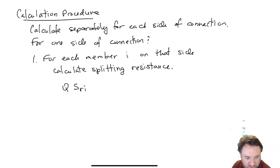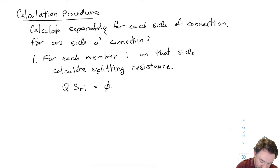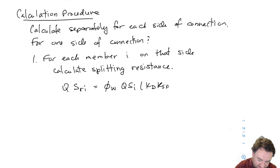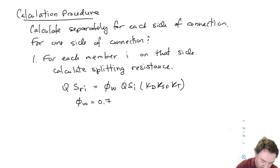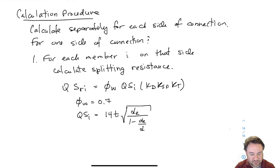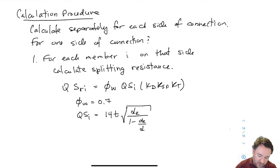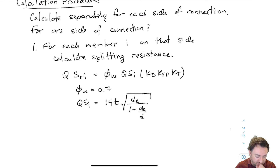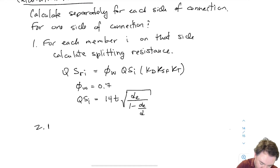I calculate the splitting resistance with this equation: QSRi = phi_W × QSi × KD × KSF × KT. phi_W is 0.7 for a brittle failure mode. The fracture mechanics part is: 14T × DE divided by (1 minus DE over D). You can see that there's no effect of strength — it's only geometry. I plug all those things in and get my splitting resistance for that member. If I have multiple members on that side of the connection, I repeat it for each.